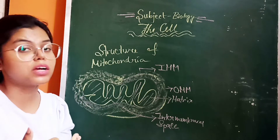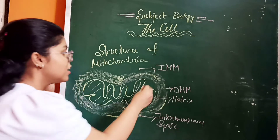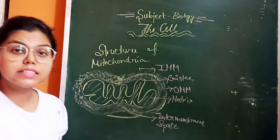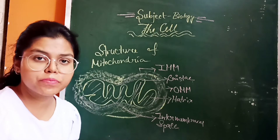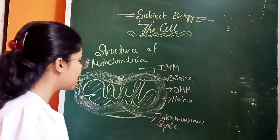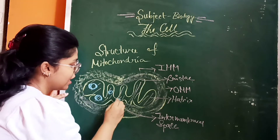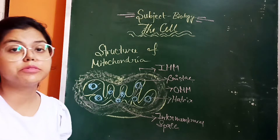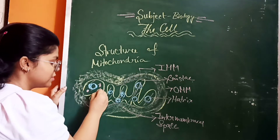The inner mitochondrial membrane is folded inside the mitochondrial matrix, creating another structure called the cristae. Mitochondria also have their own DNA, which is circular in form — that is circular DNA. Inside the mitochondrial matrix there are also different types of enzymes and ribosomes.